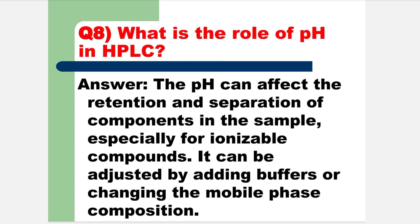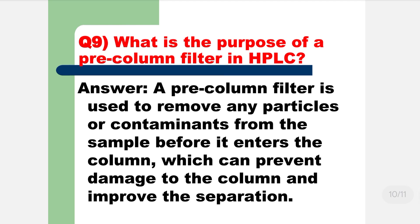What is the role of pH in HPLC? The pH can affect the retention and suppression of components in a sample, especially for ionizable compounds. It can be adjusted by adding a buffer or changing the mobile phase composition.